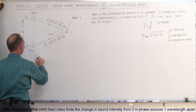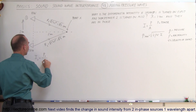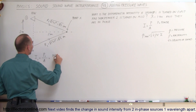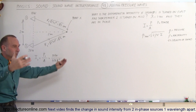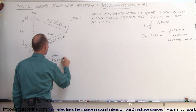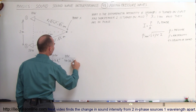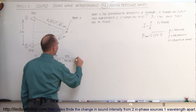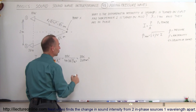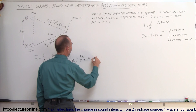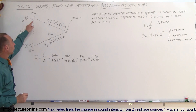The intensity from source 1 equals the power from source 1 divided by the area over which it spreads. Sound spreads over a spherical region, so the area is 4π times the distance squared. That's 10 watts divided by 4π times the square root of 5 squared, which is 5. So that's 10 watts divided by 20π meters squared, which equals 1 over 2π watts per square meter. That's the intensity caused by source 1 at that location.